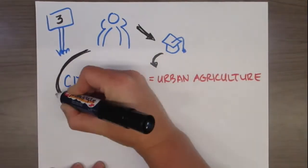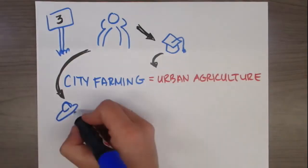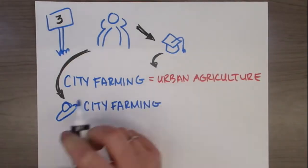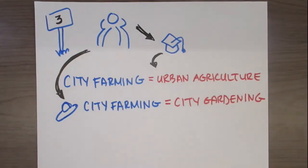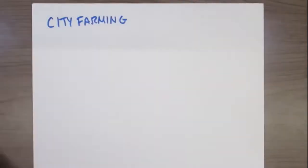For example, instead of saying city farming, an expert might call this urban agriculture. Contrastly, a local or a resident of this particular urban area might call this city gardening.